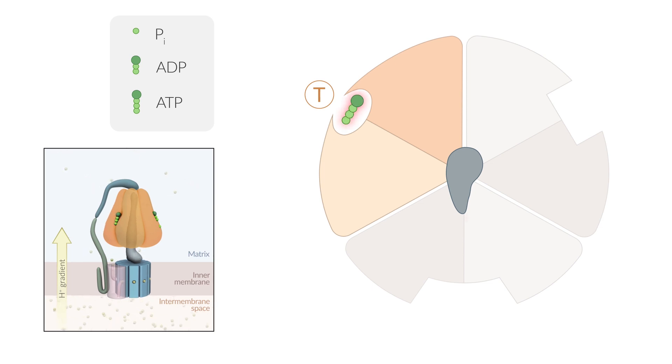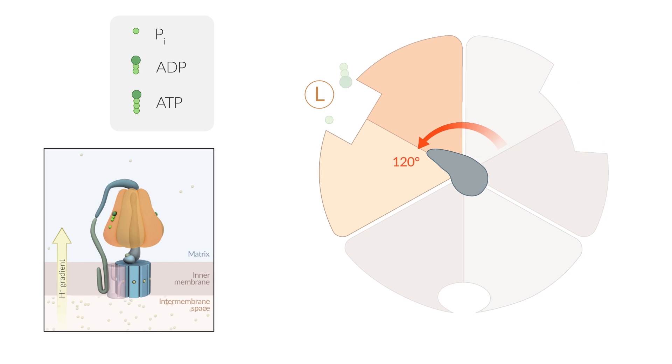With a final rotation, the binding site changes into the O conformation and ATP is released into the matrix. The cycle can then start again.